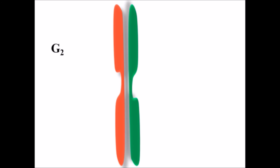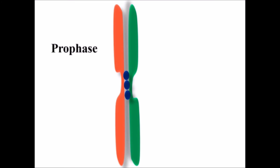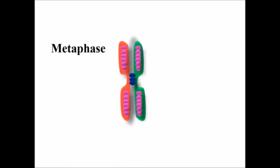Before proceeding to M phase, another important point is that until G2 phase, chromosomes are held together by a protein called cohesin. Once the cell migrates into M phase and enters prophase, cohesin dissolves except at the site of the centromere. Instead, another protein called condensin helps in the condensation of chromosomes, which is required during mitosis. Once condensed, chromosomes become visible under the microscope during metaphase.